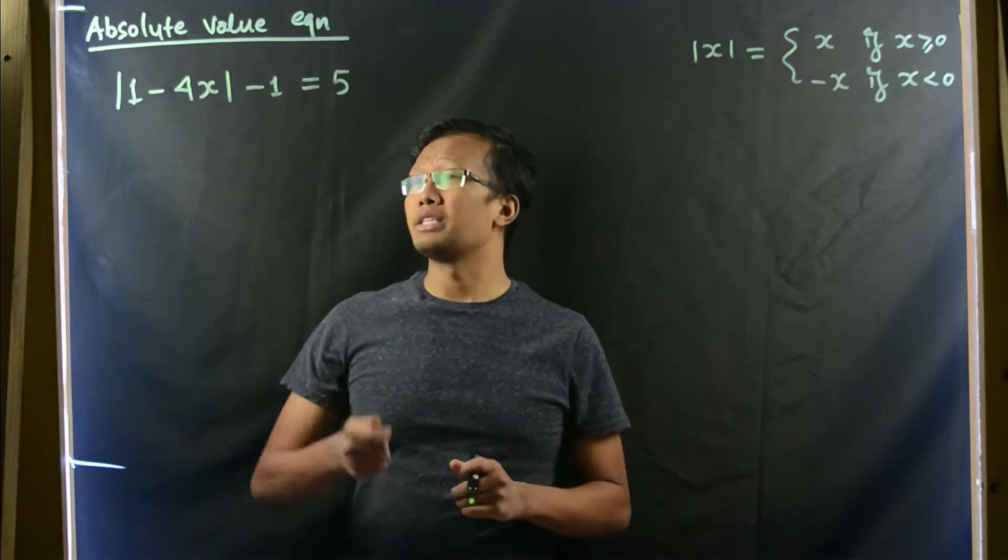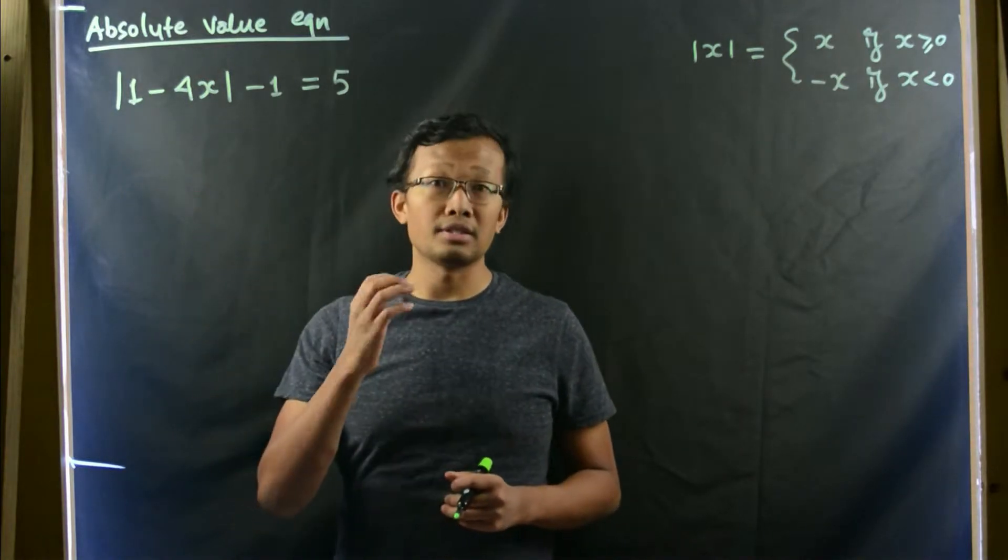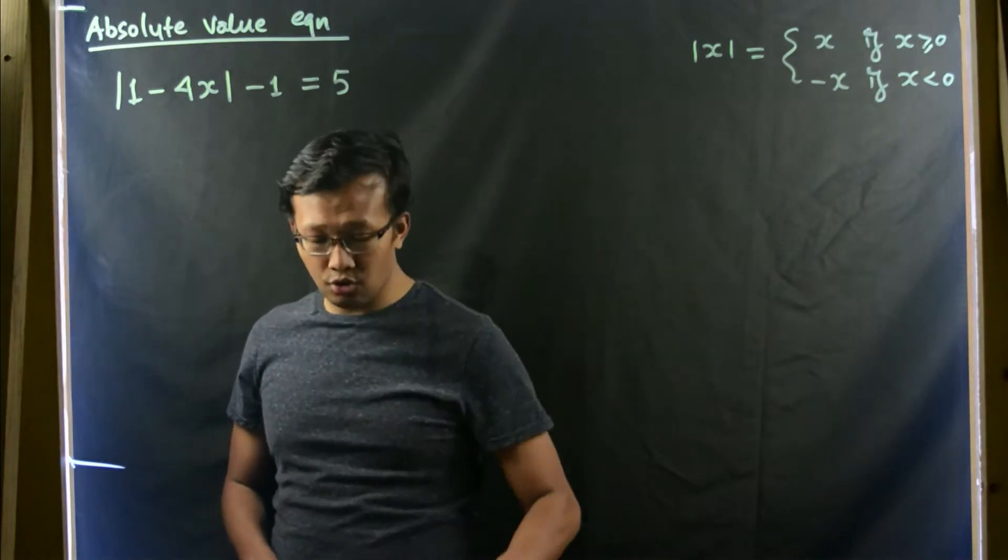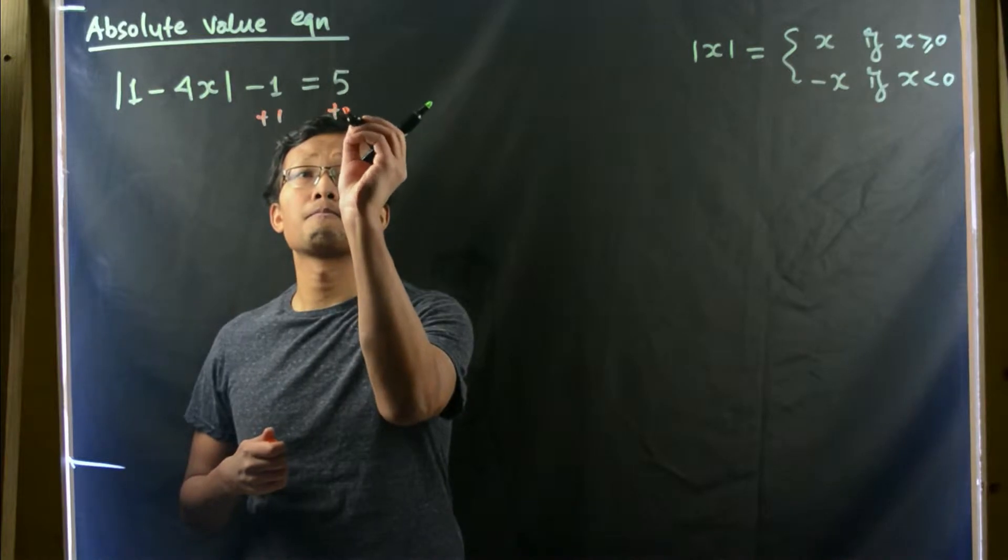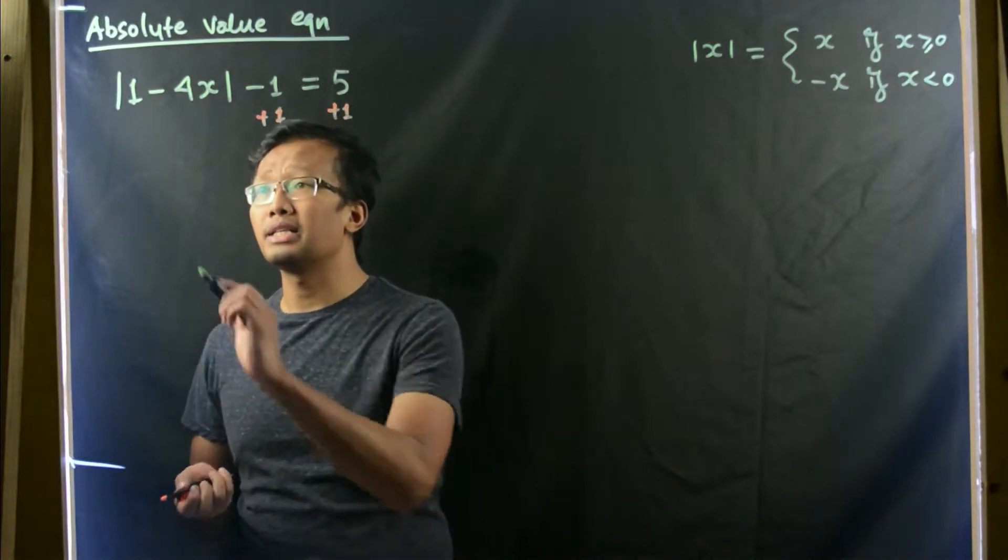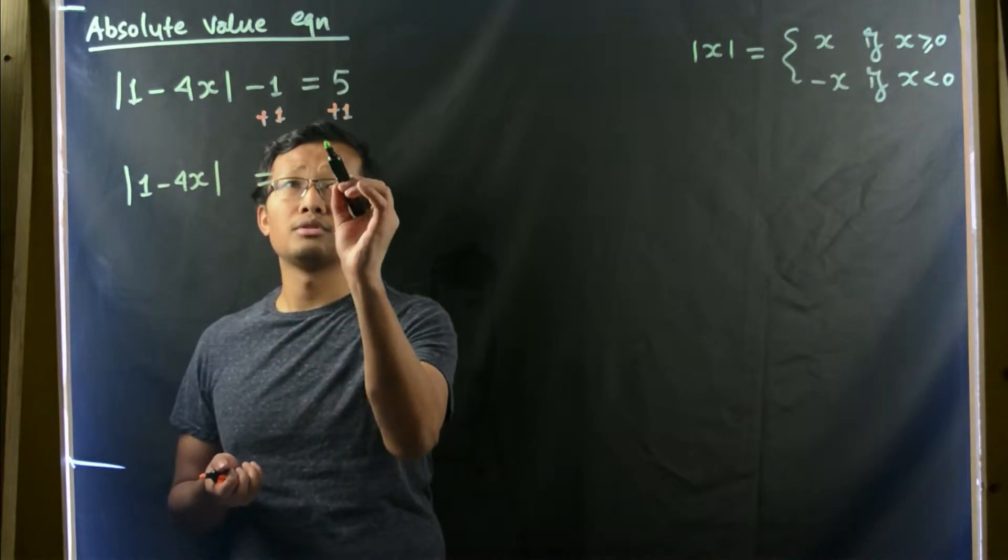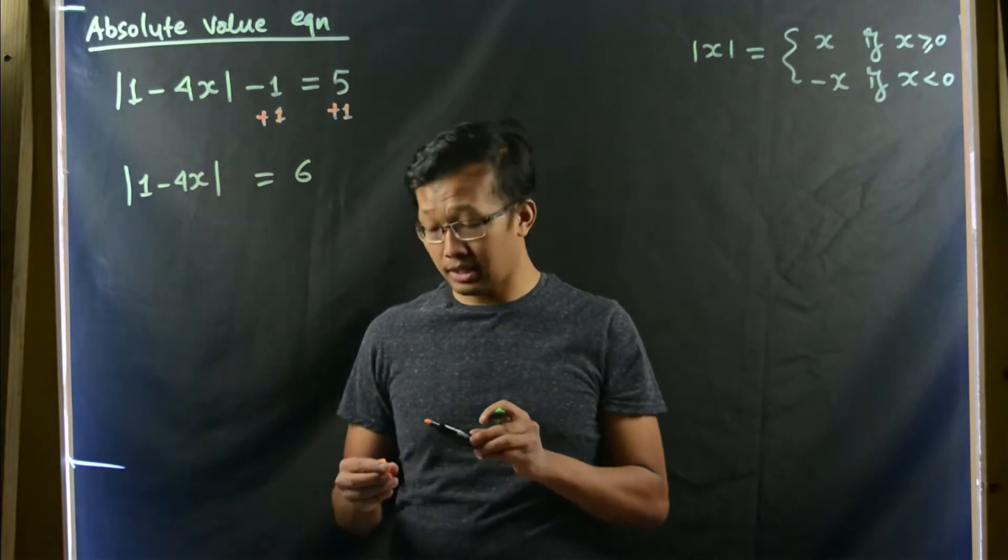Before solving this equation, let us write down this absolute value in a simple form. Let us add plus 1 to both sides. Then we'll be getting absolute value of 1 minus 4x equals 5 plus 1, which is 6.